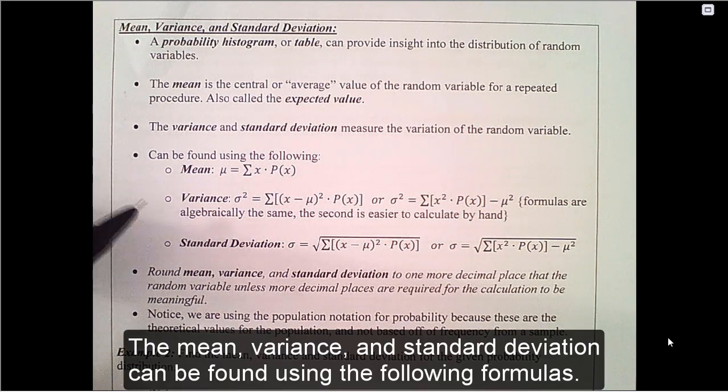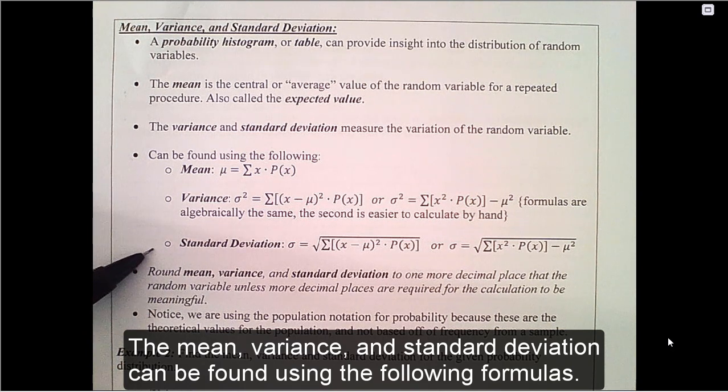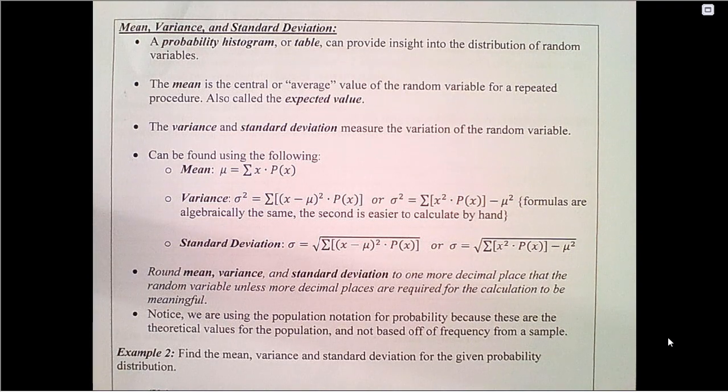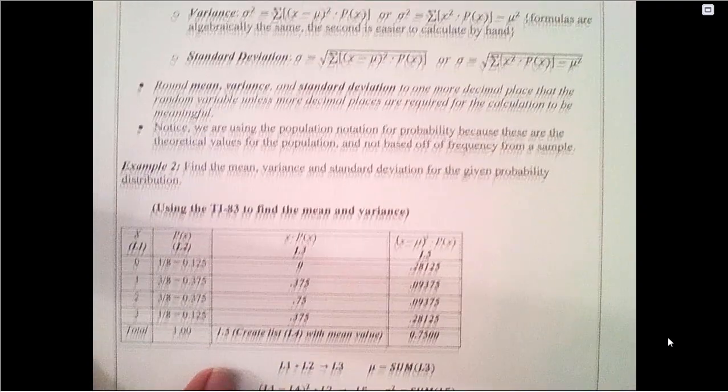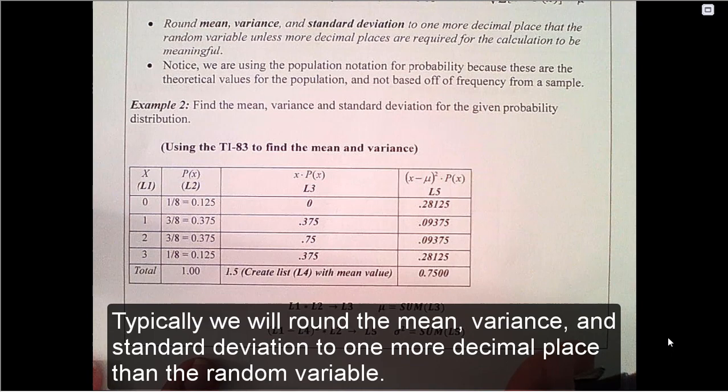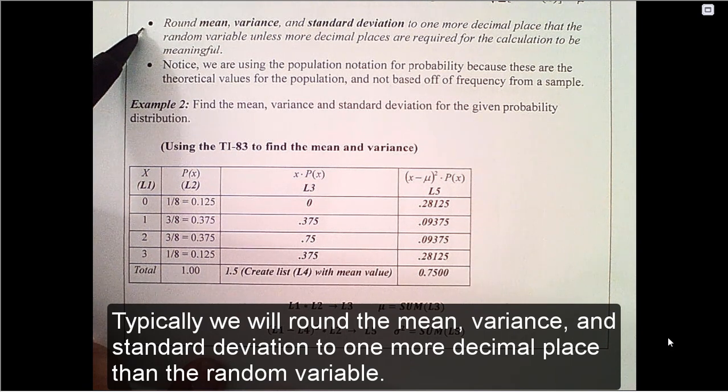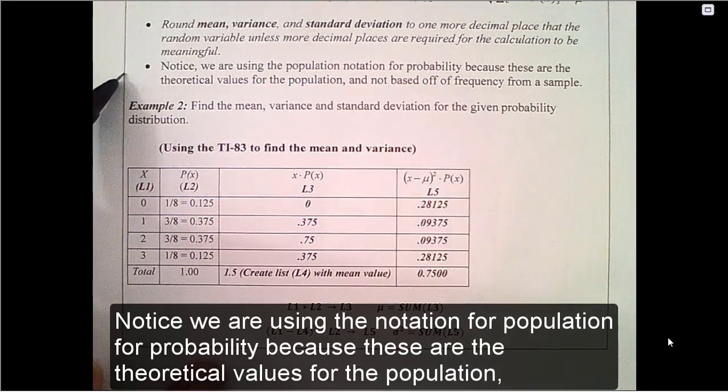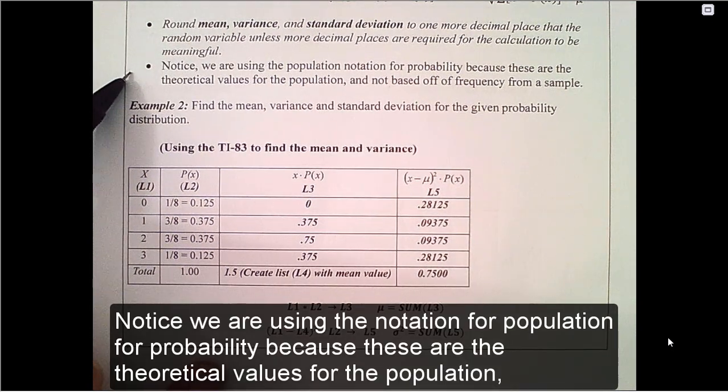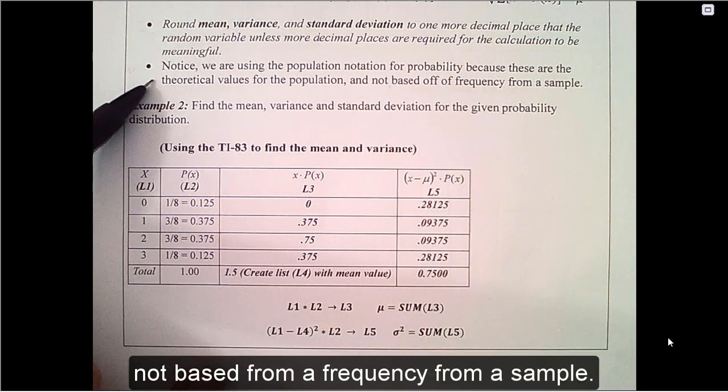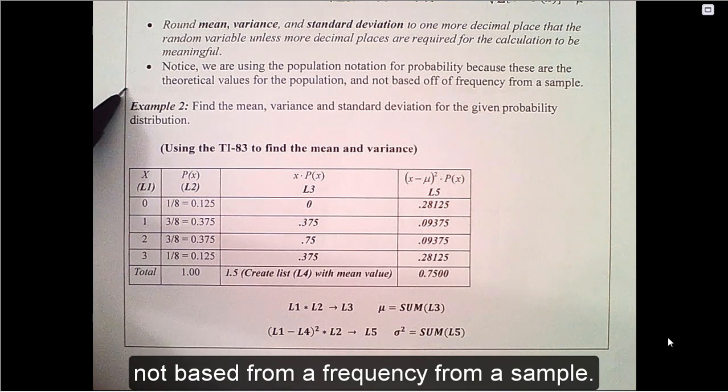The variance and standard deviation measure the variation of the random variable. The mean, variance, and standard deviation can be found using the following formulas. Typically, we will round the mean, variance, and standard deviation to one more decimal place than the random variable. Notice we are using the notation for population for probability because these are the theoretical values for the population, not based from a frequency from a sample.